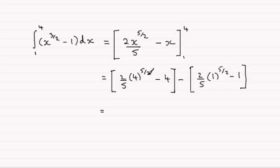4 to the power 5 over 2, take the square root of 4 which is 2, 2 to the power 5 is 32, 32 times the 2 is 64. So you've got 64 over 5 there, 64 fifths minus the 4.